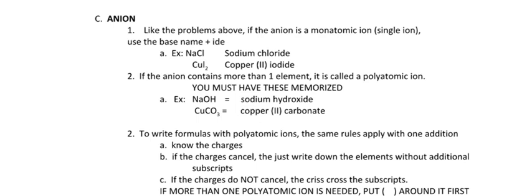Alright, that being said, let's see what this is talking about here. It says, like the problems above, the ones that were on the last episode, if the anion is monatomic, what does that mean, monatomic single ion, then it's just the base name plus -ide, just like we've been doing, sodium chloride, copper(II) iodide. Notice they're both binary ionic compounds. You only have two different elements, and that's it.